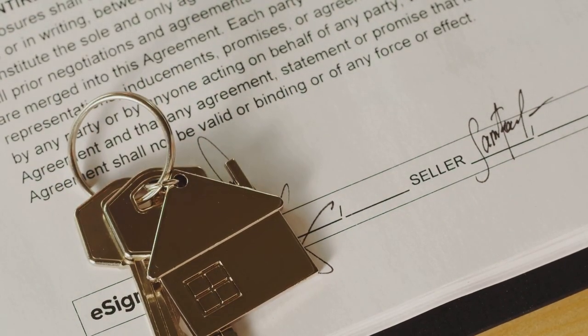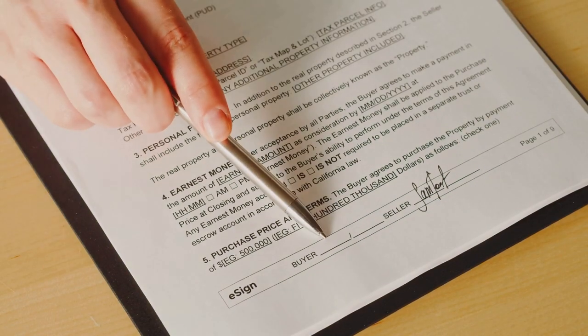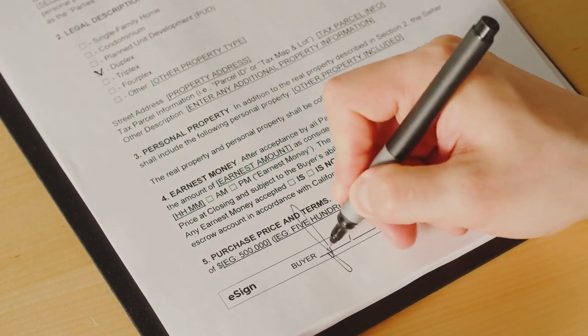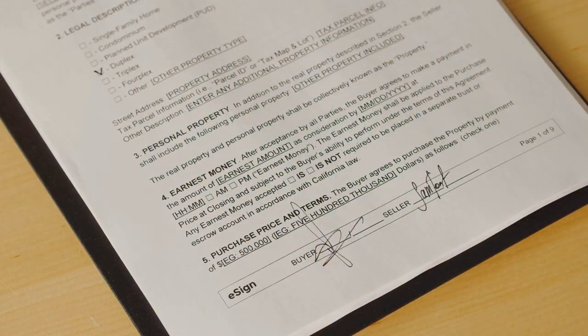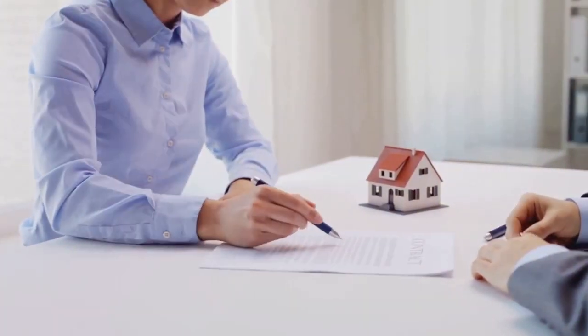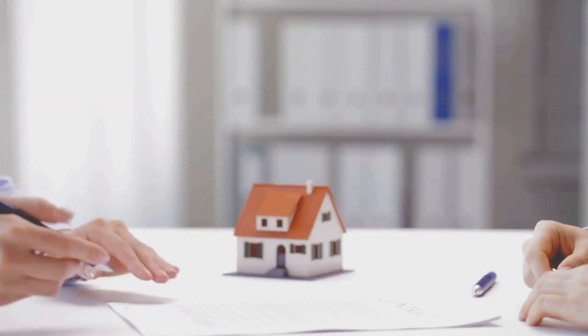Finally, we have closing documents. The closing process is like the grand finale of a real estate transaction. It's when the property officially changes hands. The closing documents include the closing disclosure, which outlines the final terms and costs of your loan.